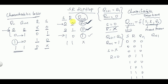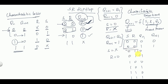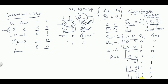From the SR truth table: when S=0 and R=0, QN+1=QN, so the first two rows get QN values (0 then 1). When S=0 and R=1, output=0 for both rows. When S=1 and R=0, the flip-flop is set so output=1 for both rows. When S=1 and R=1, it is indeterminate, so both rows are don't care.